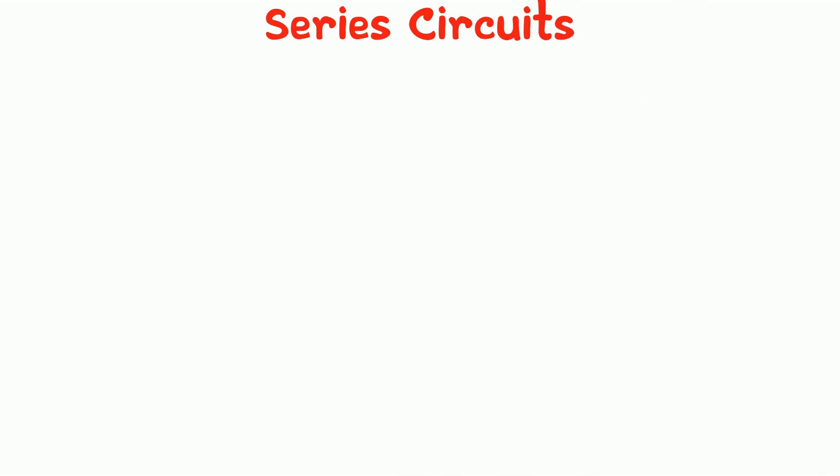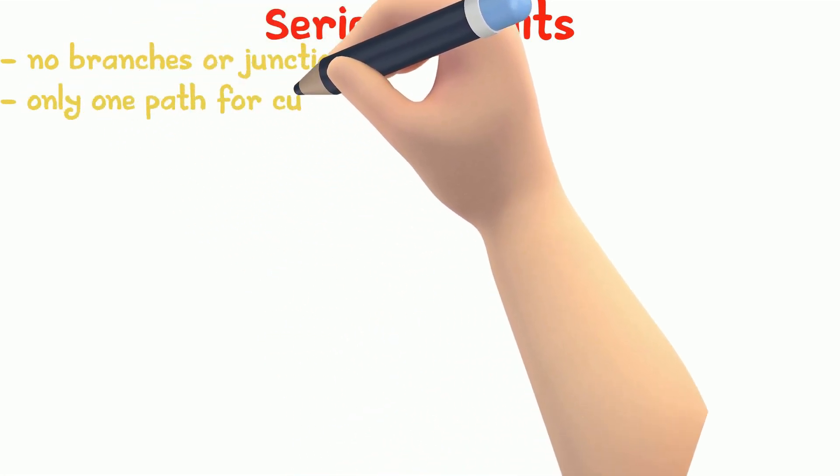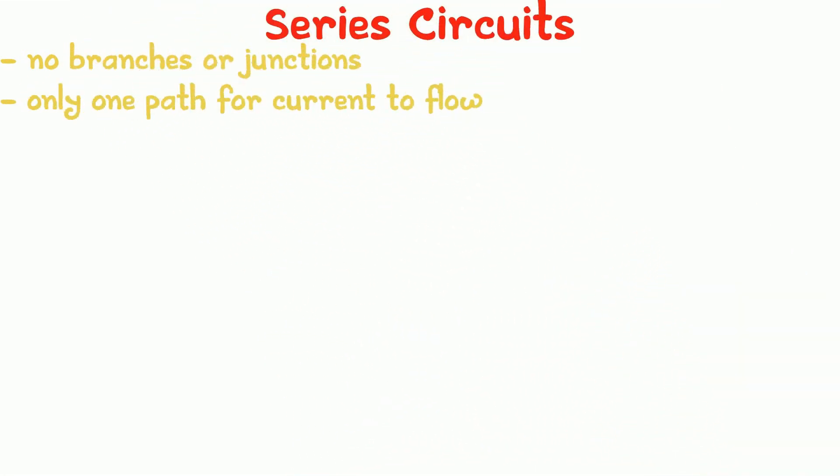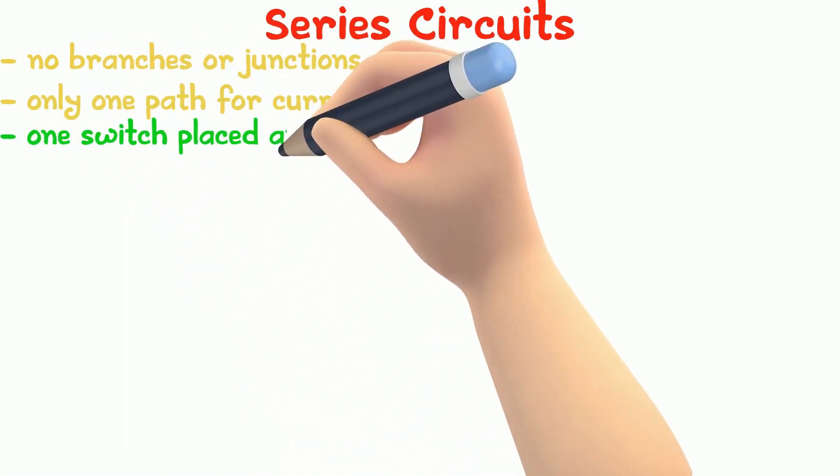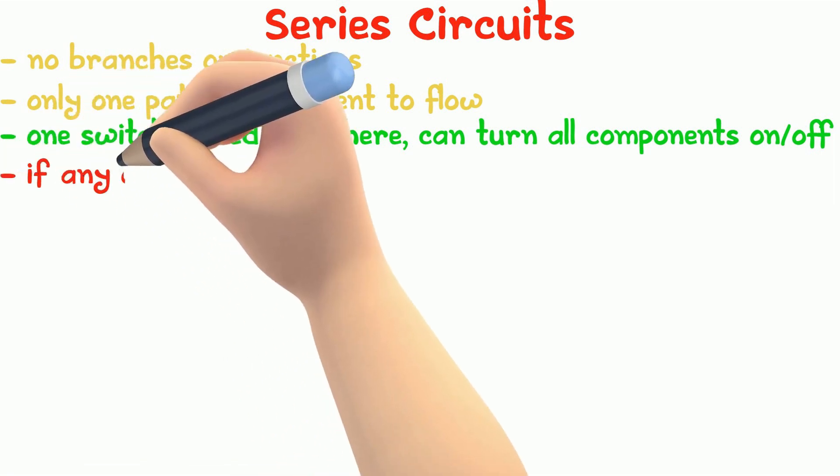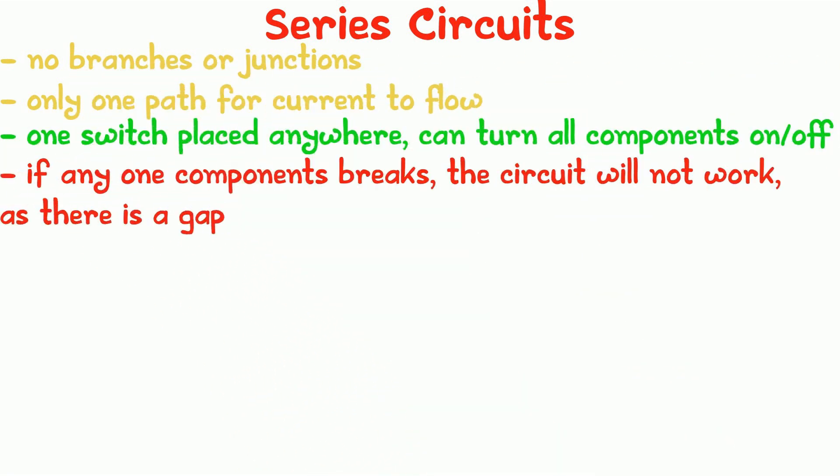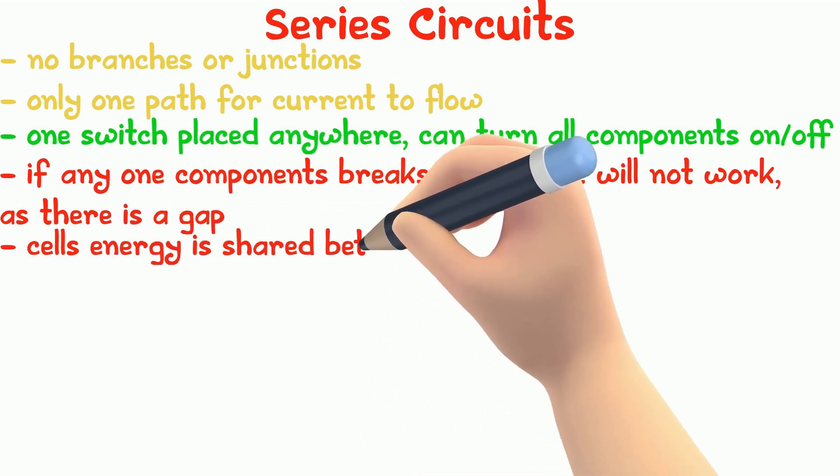There are many types of circuits. One type of circuit is where there are no branches or junctions, so there is only one path for current to flow. It is called a series circuit. In a series circuit, one switch placed anywhere can turn all components on and off. If any one component breaks, the circuit will not work since there is a gap and the cell's energy is shared between all components.